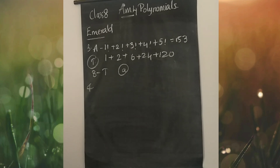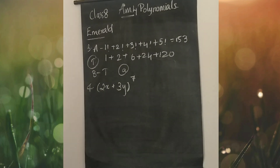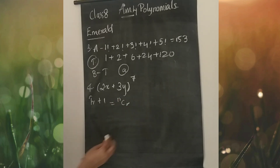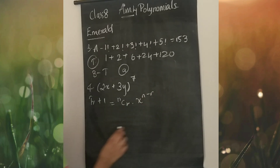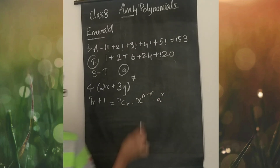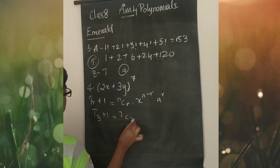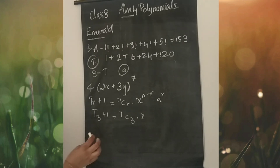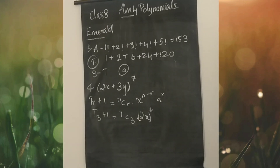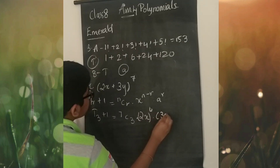Fourth question — from passage type questions. We have to find the fourth term in the expansion of (2x+3y)^7. The formula: Tr+1 equals nCr into x^(n-r) into a^r. Here r value is 3, so T4 equals 7C3 into (2x)^4 into (3y)^3.